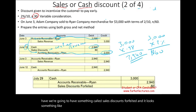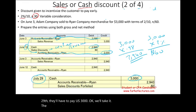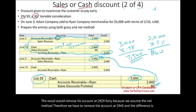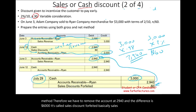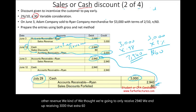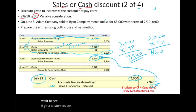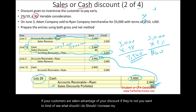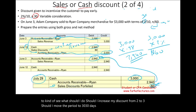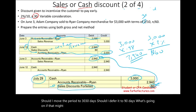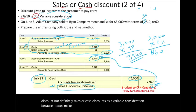Tracking sales discounts forfeited is important because it tells you whether customers are taking advantage of your discount. If they're not, you might ask: should I increase the discount from 2% to 3%, or extend the discount period? Sales or cash discounts are a variable consideration because they affect how much you ultimately receive.